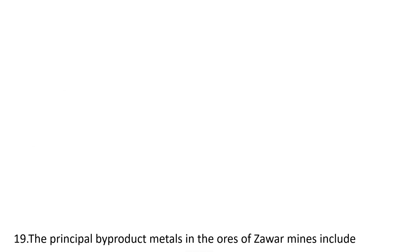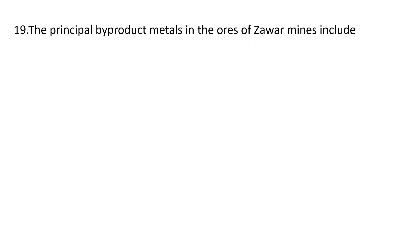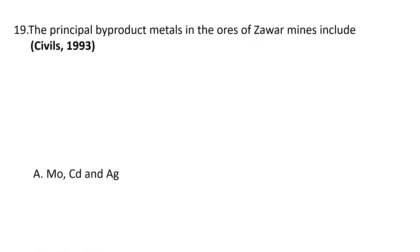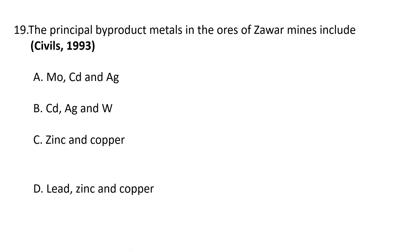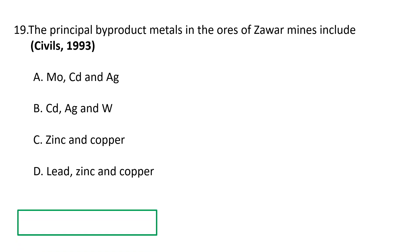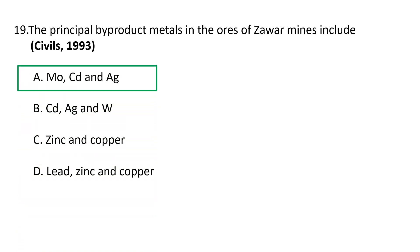Next question: The principal byproduct metals in the ores of Zawar mines include A. Molybdenum, cadmium, and silver, B. Cadmium, silver, and vanadium, C. Zinc and copper, D. Lead, zinc, and copper. The correct answer is A — molybdenum, cadmium, and silver are the byproduct metals in the ores of Zawar mines in Udaipur.